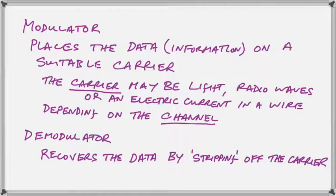The demodulator gets back our data by stripping off the carrier, because the carrier, whether it's a radio wave or whatever the carrier happens to be, is not the data. That's what carried the data from one point to the next. So you get rid of the carrier and recover the data in the demodulator.